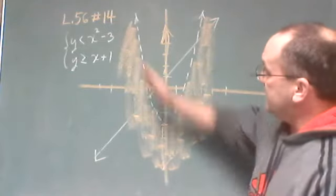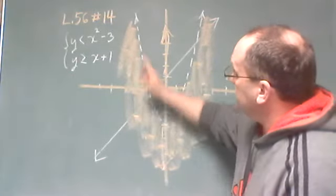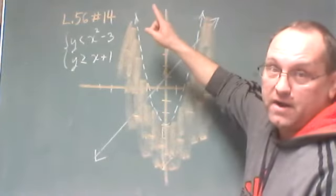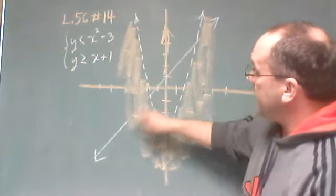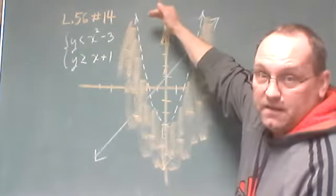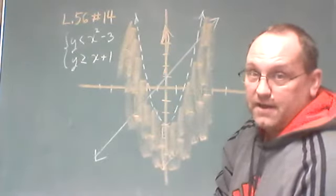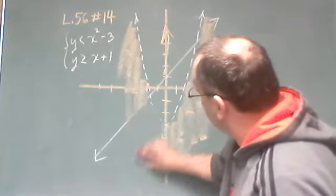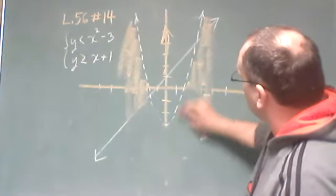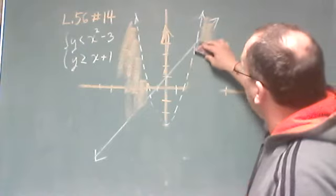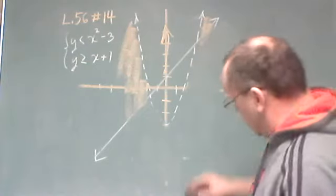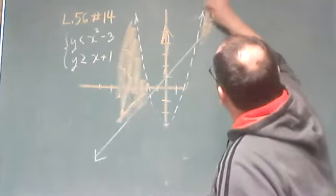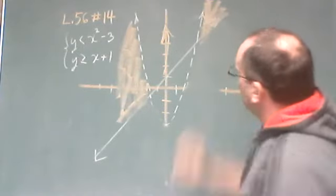So what we need in this case, we need every point below the parabola, not including the curve of the parabola itself, and every point above the line, including the portion of the line itself. So that excludes the portion below the line. It excludes this region that I had shaded earlier. It only leaves these two portions of the curve shaded.